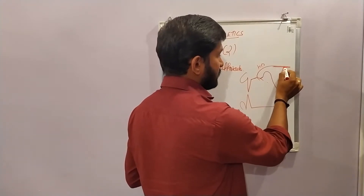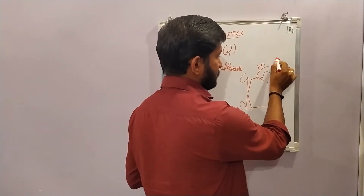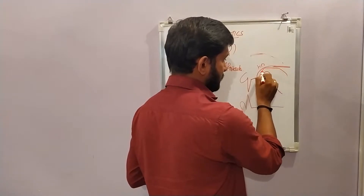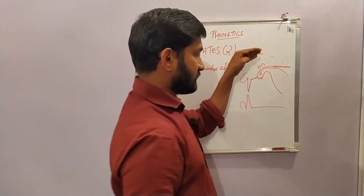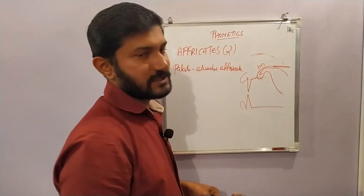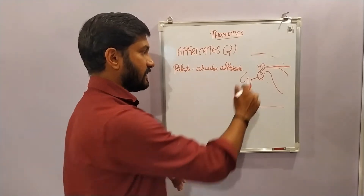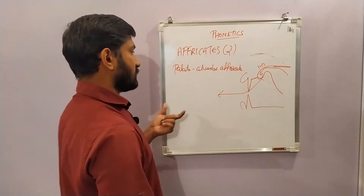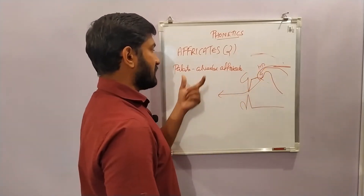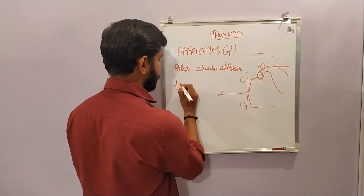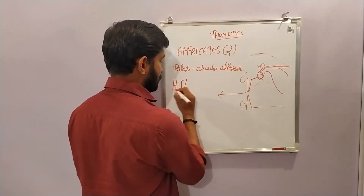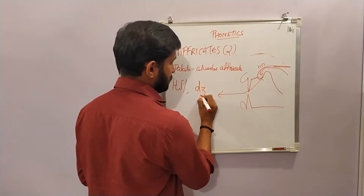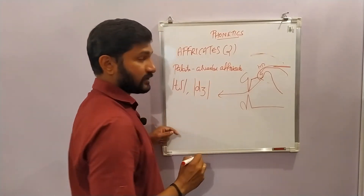The soft palate is raised, blocking the passage of air through the nasal cavity. The air reaches the obstruction point, and after the slow separation of the tip of the tongue, the air escapes. So the two palatalveolar affricates are /tʃ/ as in 'chair' and /dʒ/ as in 'jar'.